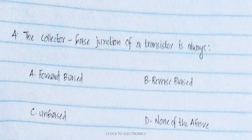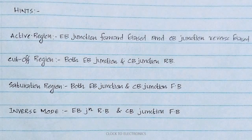The next question: the collector-base junction of a transistor is always — options are forward biased, reverse biased, unbiased, or none of the above. The emitter-base junction is always forward biased and the collector-base junction is always reverse biased.